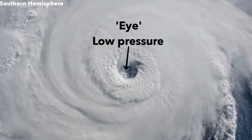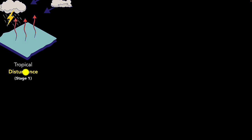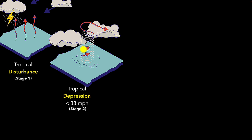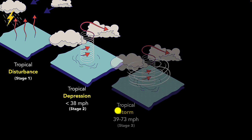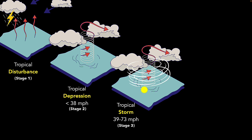The storm keeps growing as long as it stays over warm water with moist air above. Over time, it strengthens and goes through four stages. The first stage is called a tropical disturbance — a group of thunderstorms forming over warm waters. Then comes tropical depression, where winds start to rotate but stay below 38 miles per hour. Then comes tropical storm, with winds spinning between 39 to 73 miles per hour, and now the storm gets a name — for example, Tropical Storm Irene. Finally, we have the full-fledged tropical cyclone, with winds of 74 miles per hour or more, and the name gets upgraded — Tropical Storm Irene becomes Hurricane Irene.